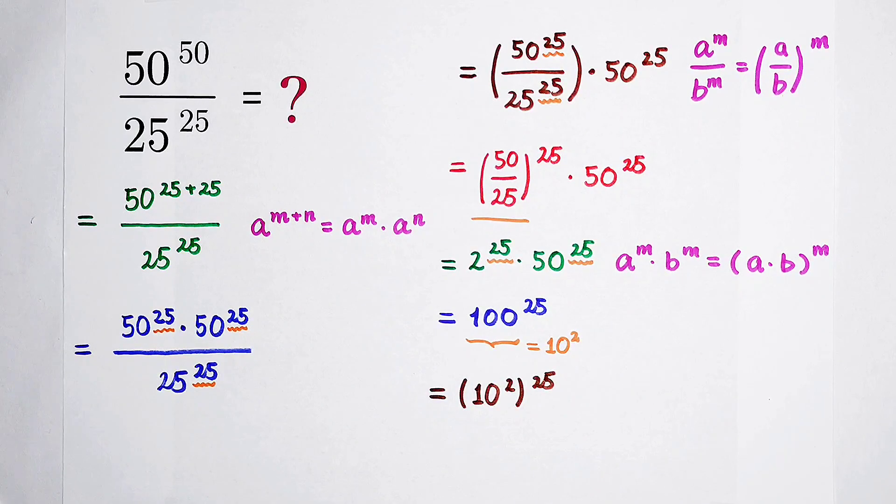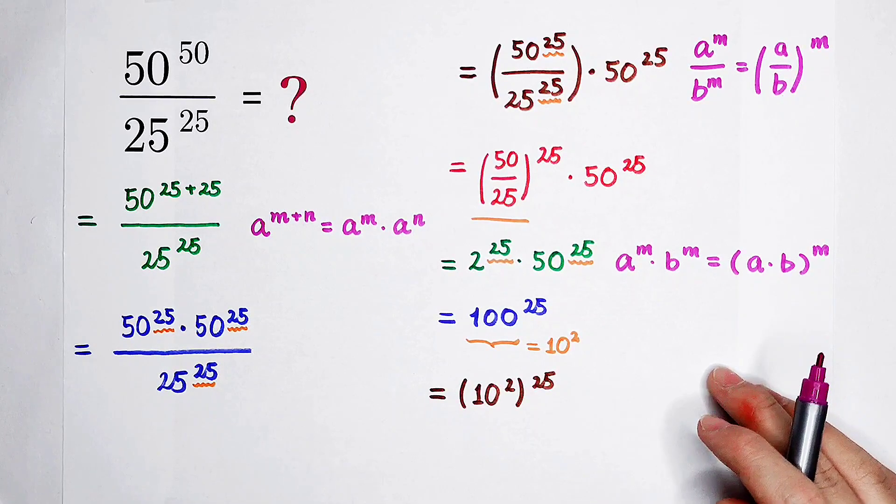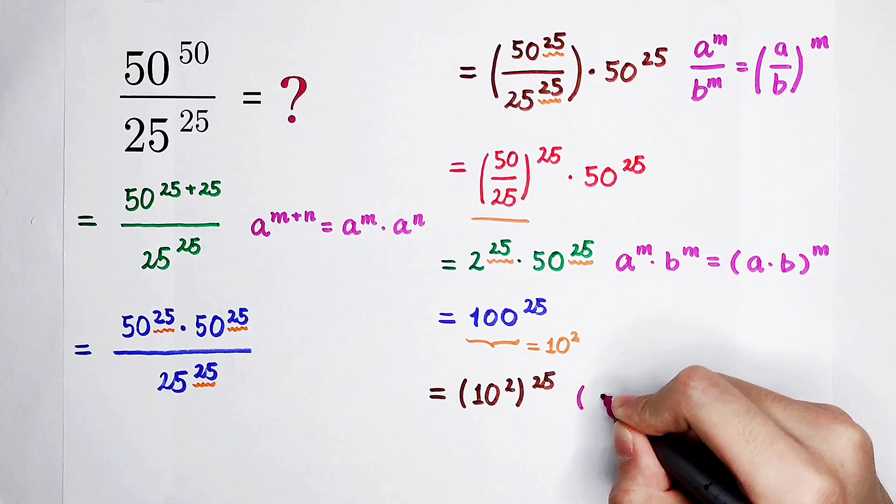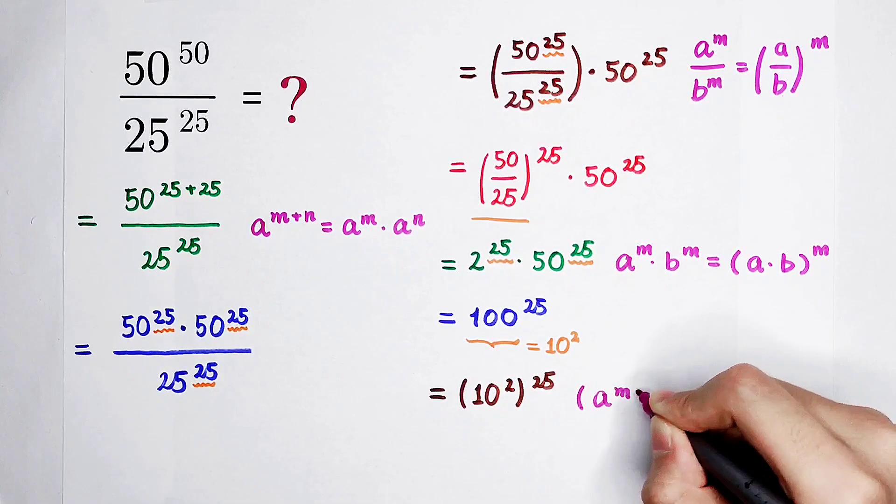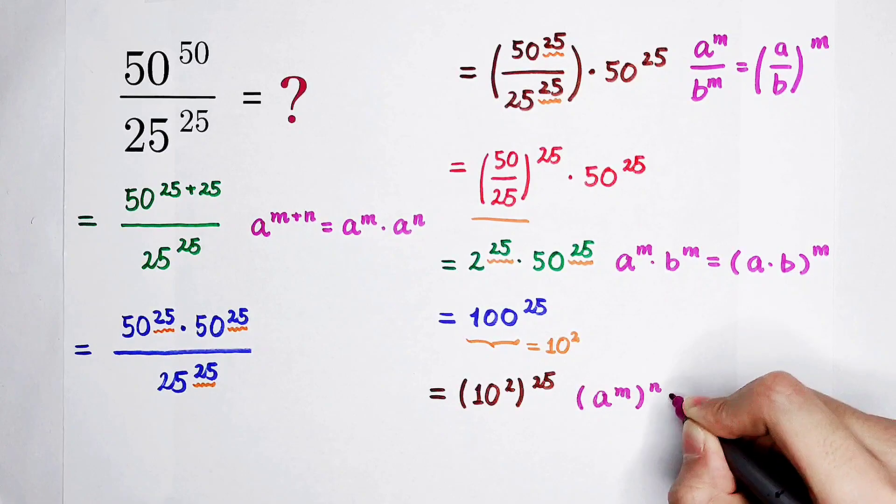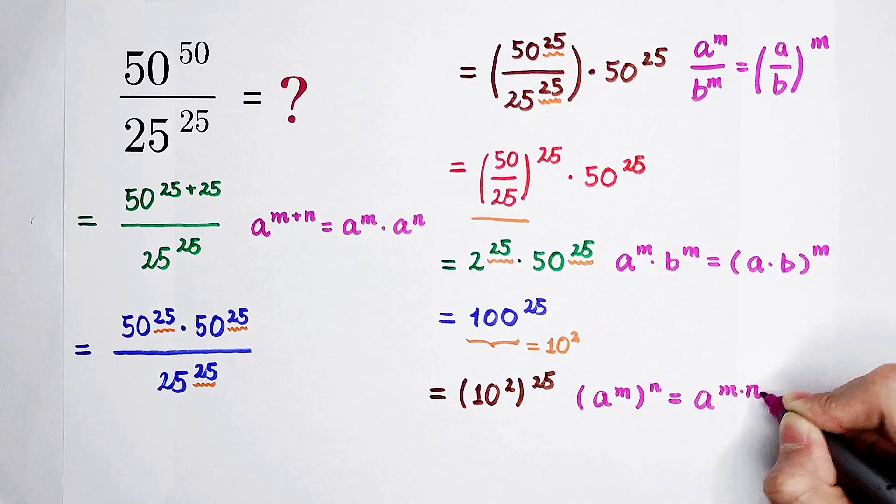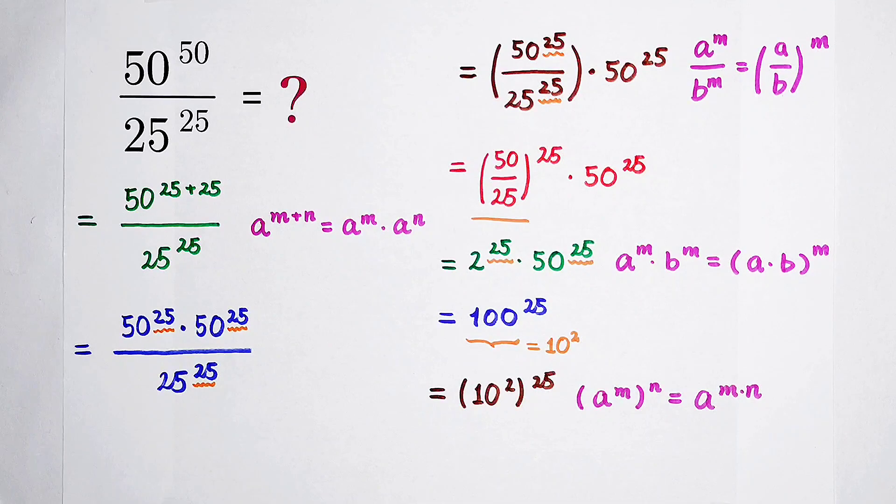So in our today's lesson, you have to use a lot of formulas. Annoying, isn't it? Our fourth formula is a to the power of m and then also power of n is equal to a to the power of m times n. Of course, it is also equal to a to the power of n then also power of m, but it is not necessary for this question.